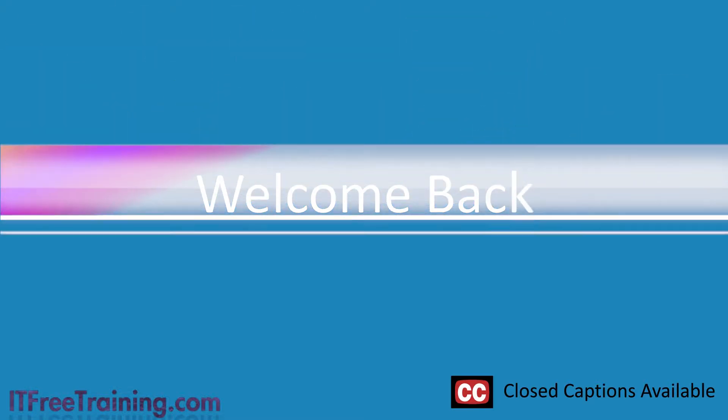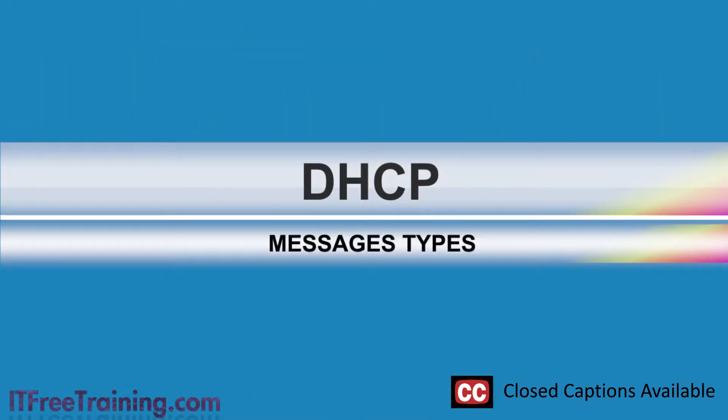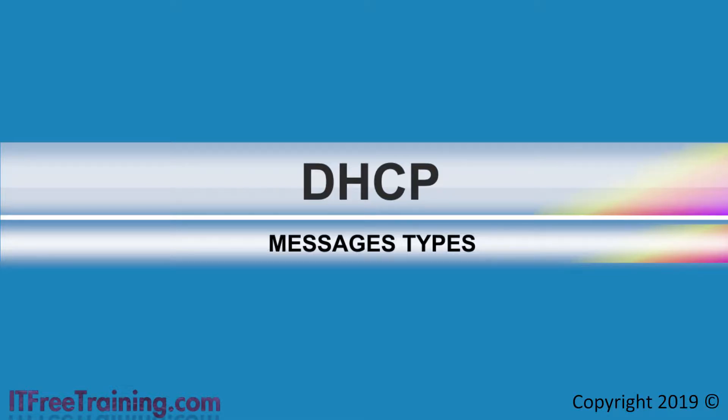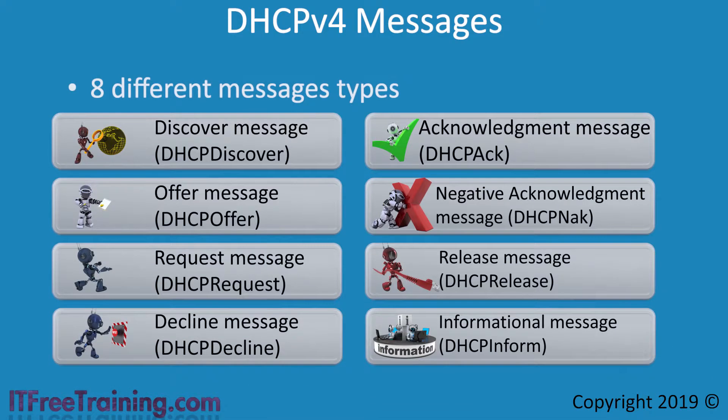In this video from ITFreeTraining, I will look at the different types of messages that a DHCP server uses. Understanding the different types of messages that a DHCP server uses will help you better understand how DHCP works. In order for a DHCP client and a DHCP server to communicate, a DHCP message must be sent over the network. With a DHCP server using the IPv4 protocol, there are 8 different messages as shown. I will go through each of them before looking at the IPv6 DHCP message types.